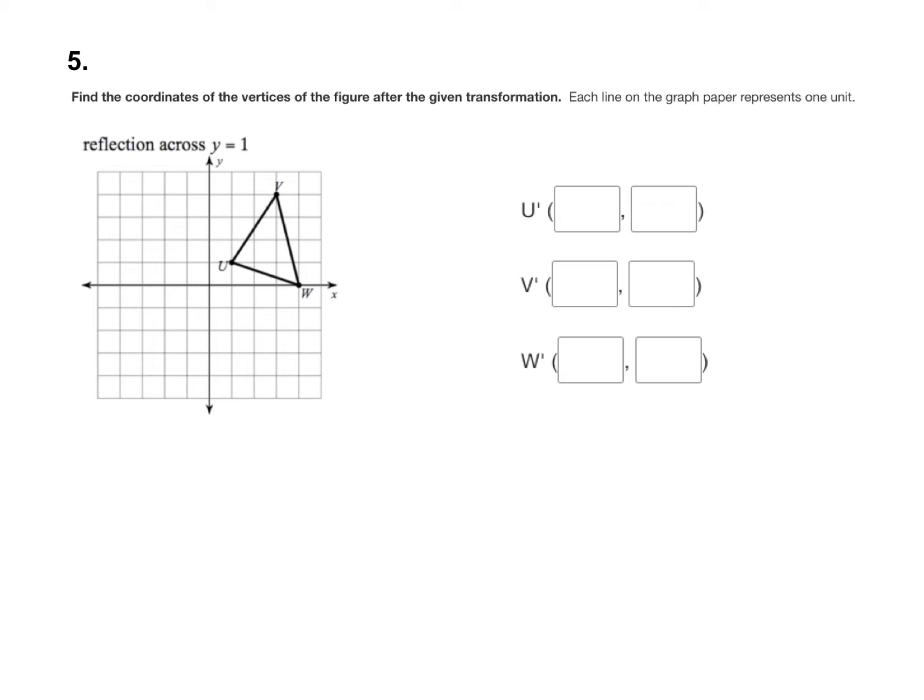Remember that when you have y equals a number, you're going to start by finding that number on the y-axis. So y equals 1 is right here, and then y equals lines are horizontal lines. So we're going to draw a dotted line right there, and that's my reflection line.